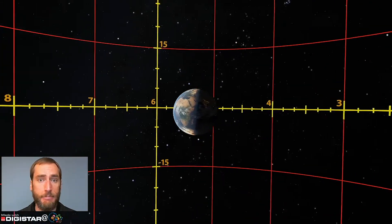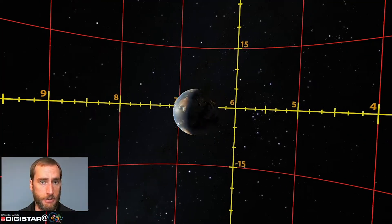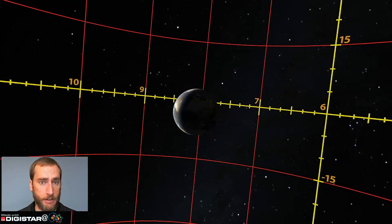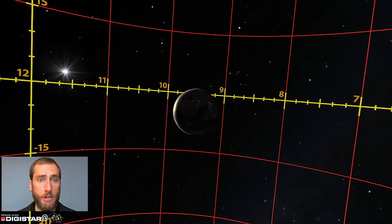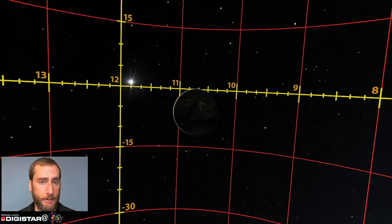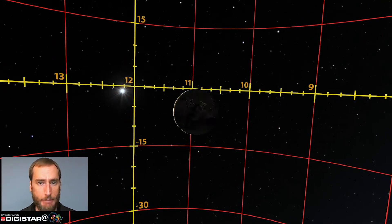On the equinox, the sun appears to cross the celestial equator as viewed from the Earth. Today, it's going to cross from the northern half of the sky to the southern half of the sky. Why does this happen?